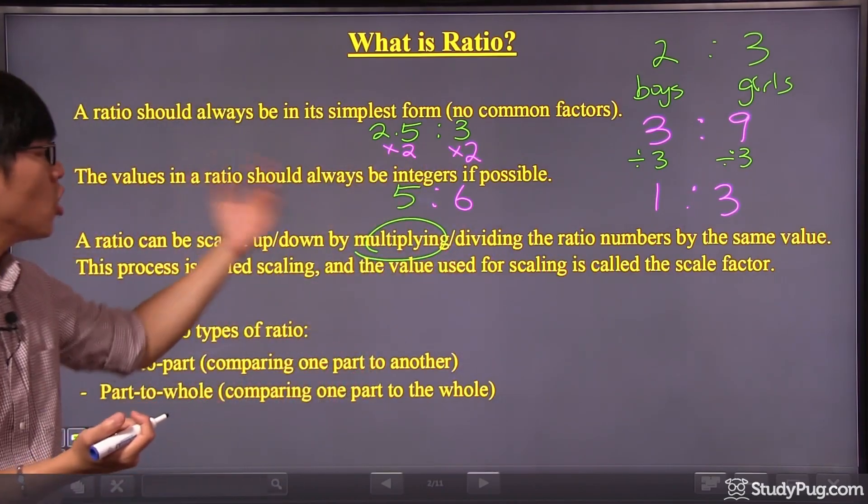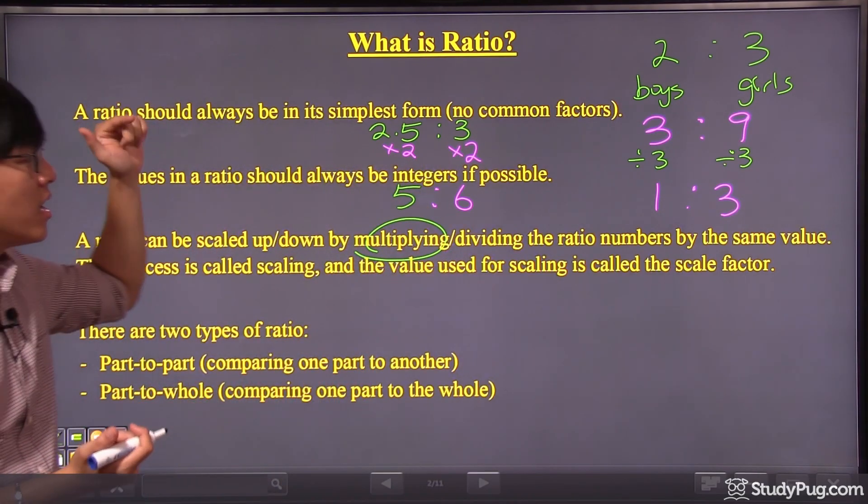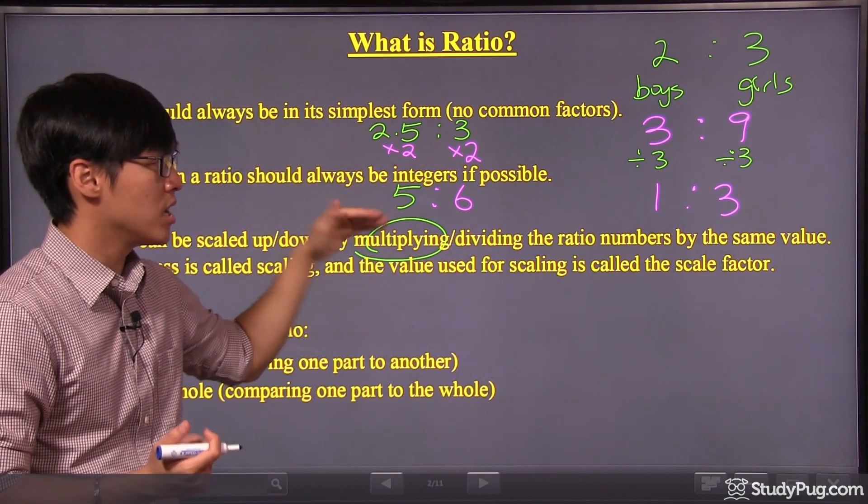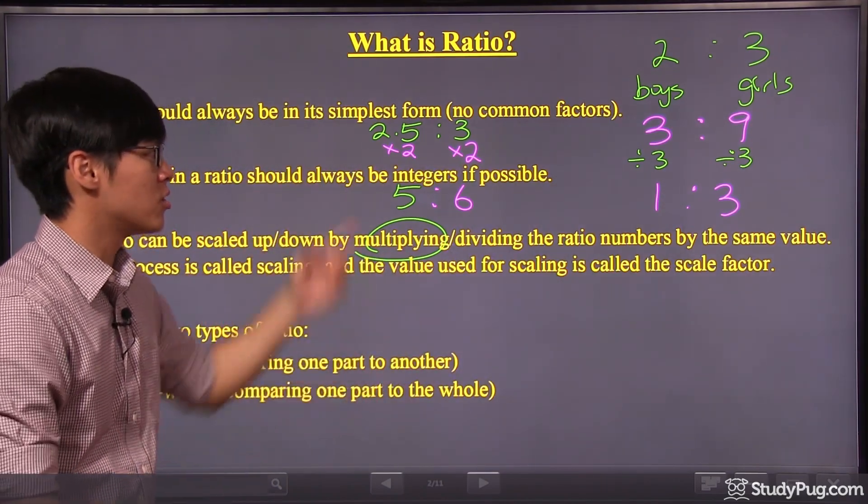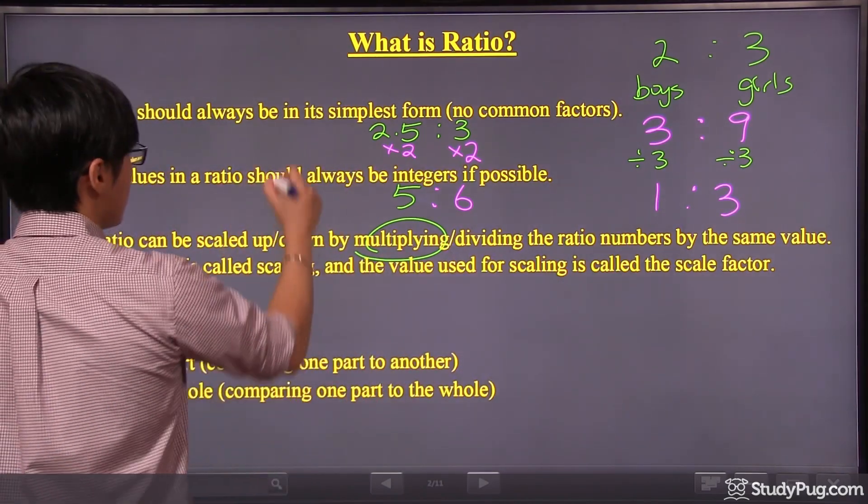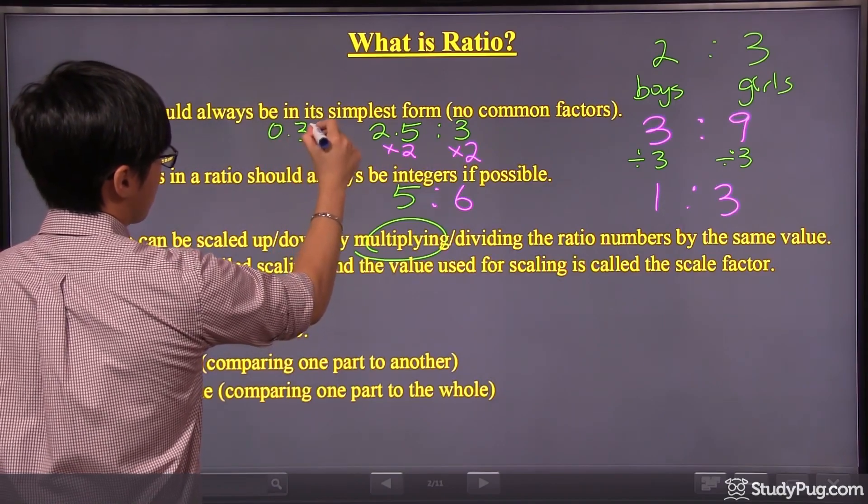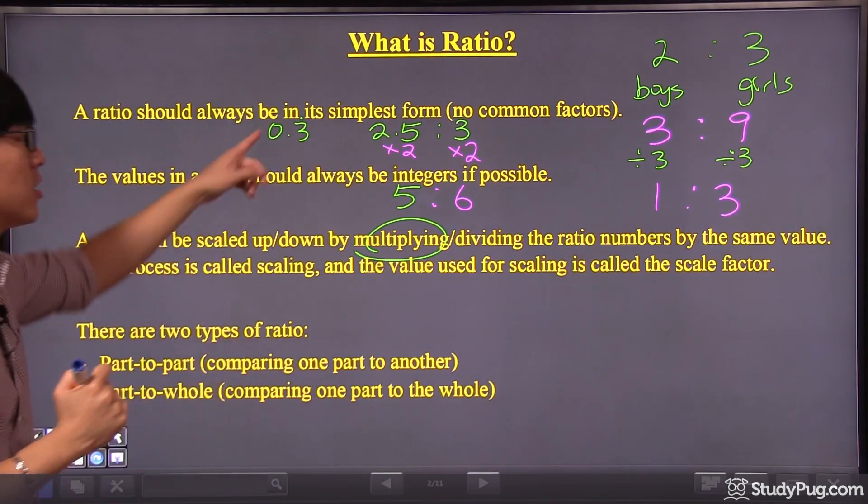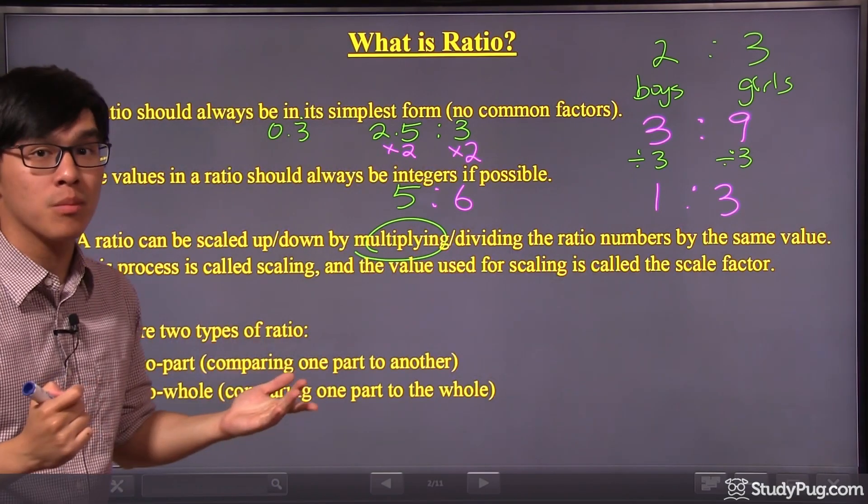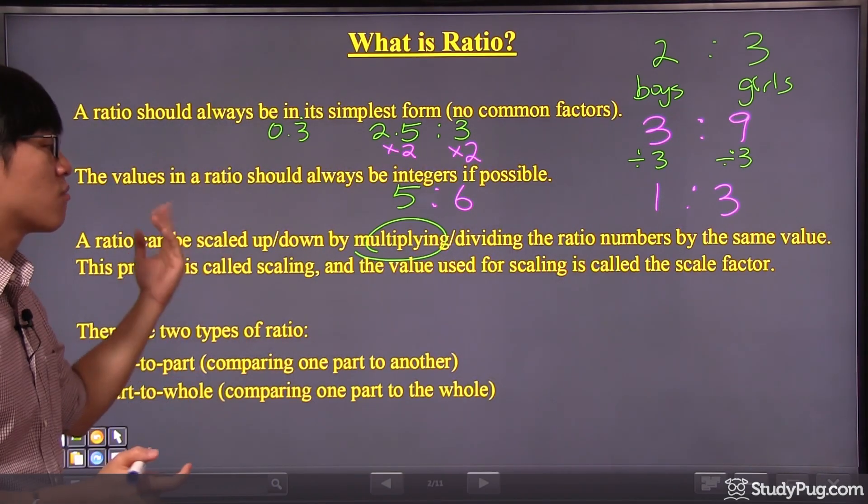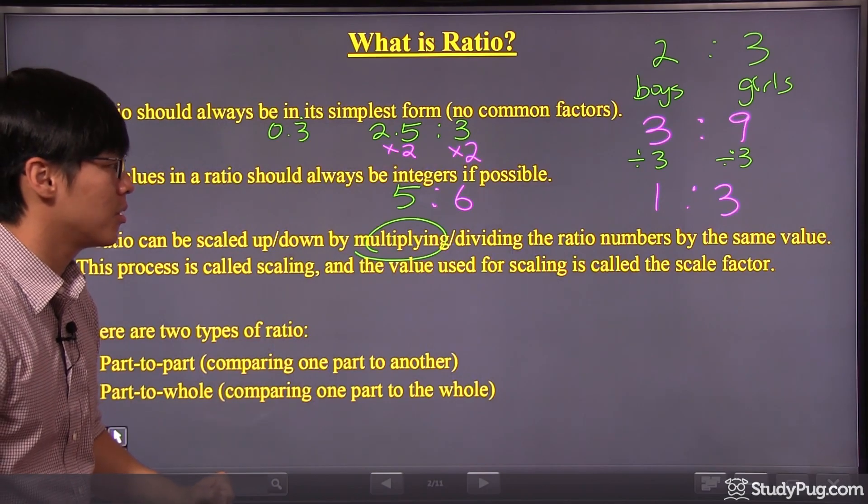Now, obviously, you only need to perform this step if it's possible. If not, then you don't need to do it. For example, if you have 0.3 repeating, there's no way you can convert it back into a whole number. So in that case, you don't need to worry about converting into integers.